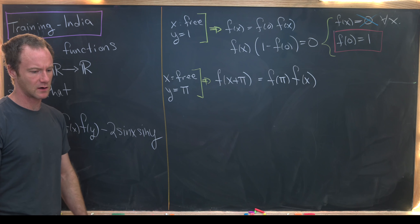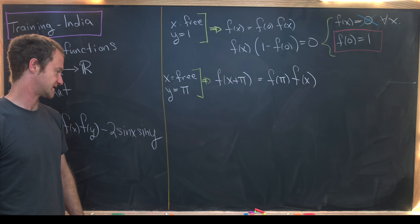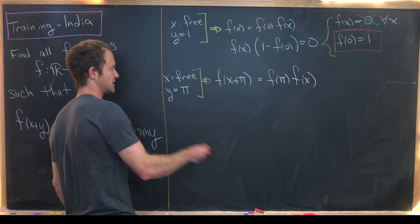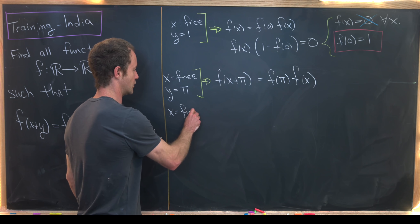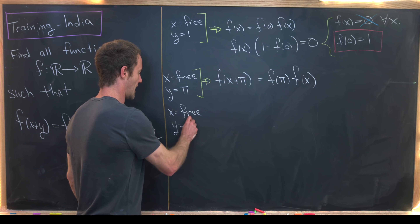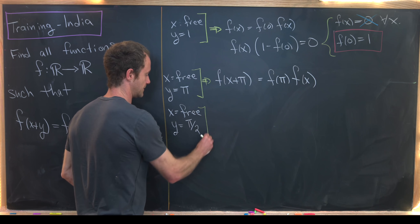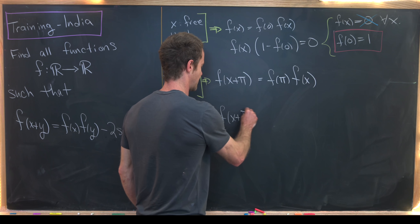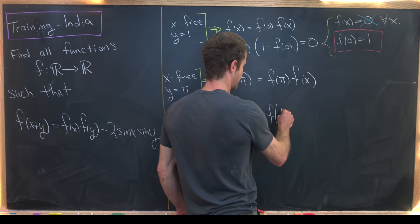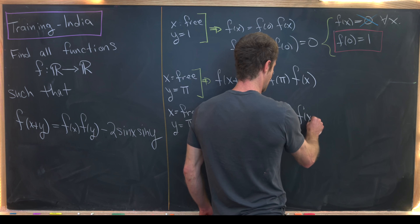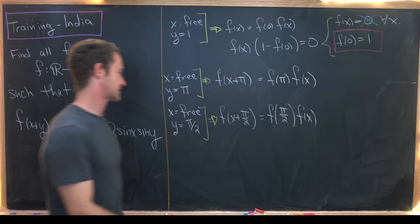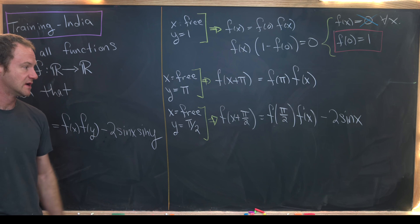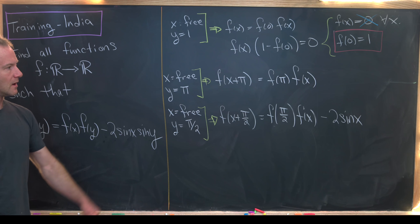Now let's think about other nice values of sine. Since sin(π/2) = 1, we can take advantage of that. Setting x as a free variable and y = π/2 gives us f(x + π/2) = f(π/2)·f(x) − 2·sin(x)·sin(π/2). Since sin(π/2) = 1, this simplifies to f(x + π/2) = f(π/2)·f(x) − 2·sin(x).